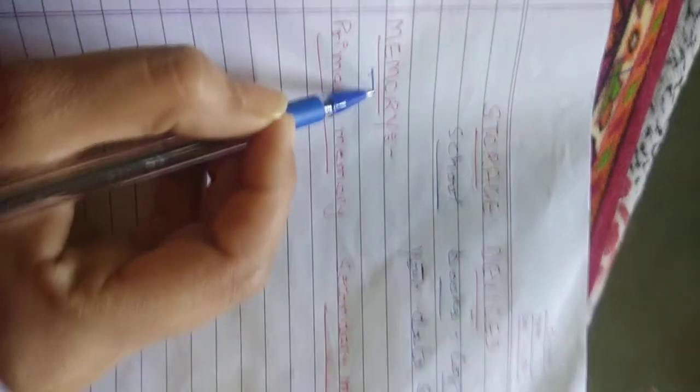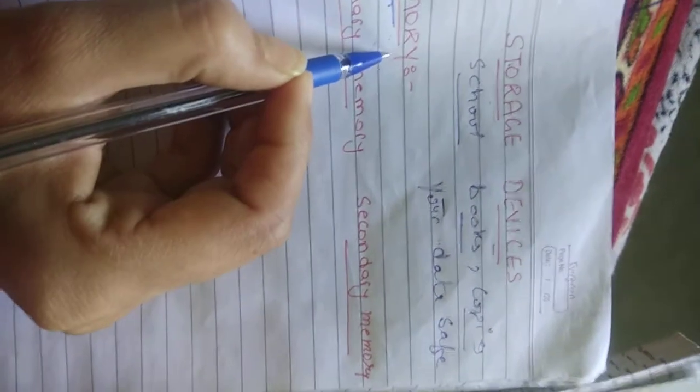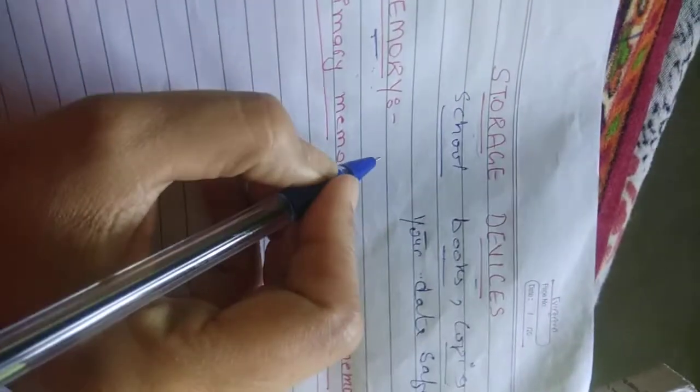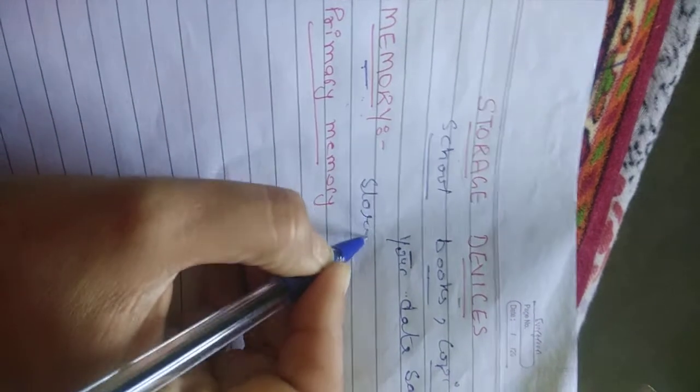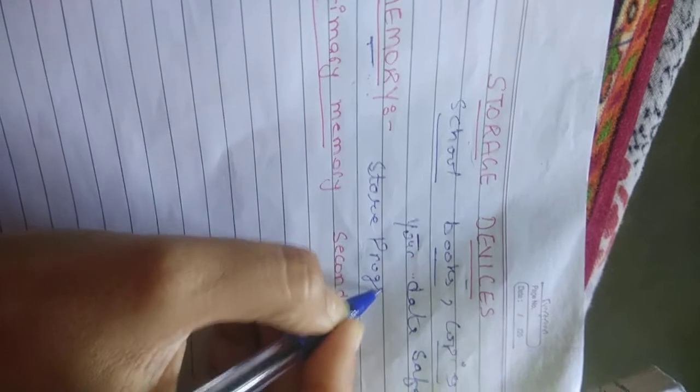Here is the memory. Memory refers to a physical device which is used to store programs. Why we use memory? It is used to store programs or data.